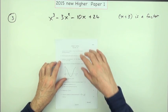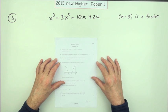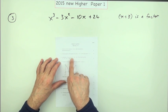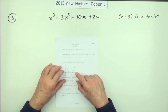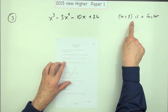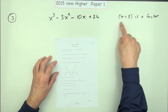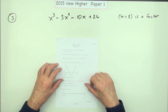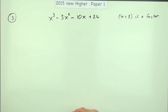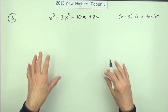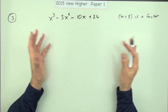Number three from the 2015 new hire paper one. Factorize a cubic expression given that you have this linear factor. Fairly straightforward. There's more than one way — how would you demonstrate that? There are a variety of ways.